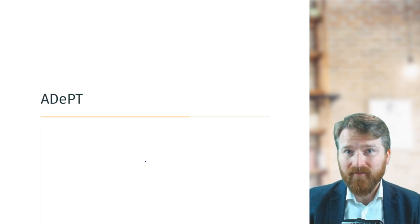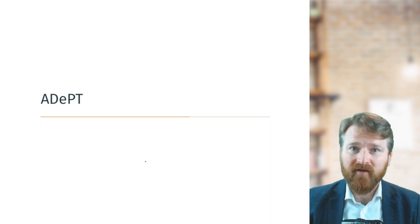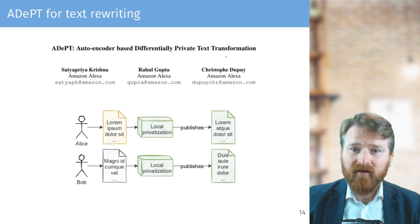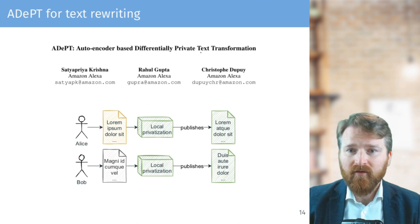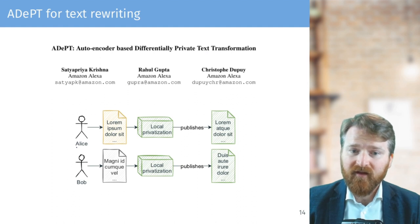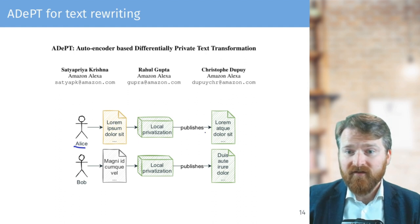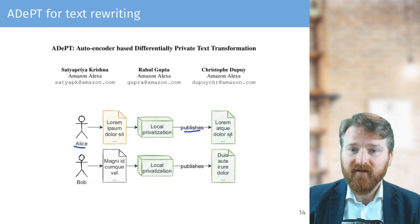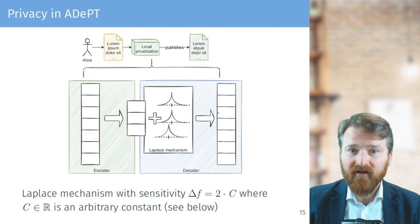So now when we understand differential privacy and Laplace mechanism, we can have a look at AdePT, which is actually the core of our paper—a formal analysis of AdePT. AdePT is a paper from a team from Amazon Alexa at EACL 21, where they try to encode text or transform text to text while being differentially private. So what it means is that again we have Alice, which produces some text—Lorem Ipsum—and there's a privatization of this text, and what we see is something which should protect privacy, so a little bit different text.